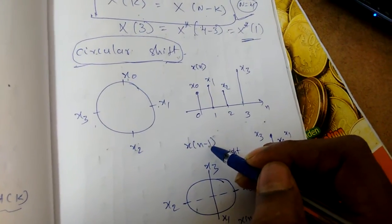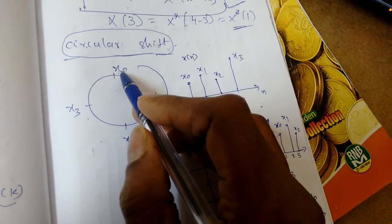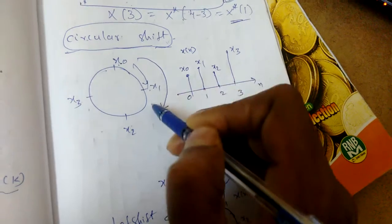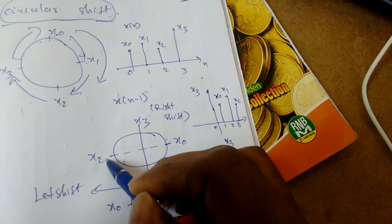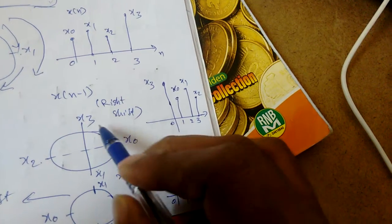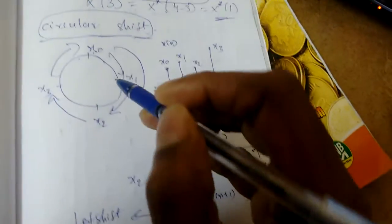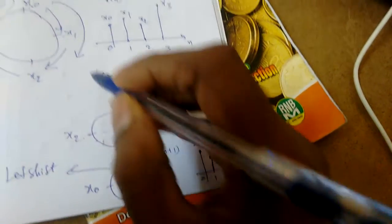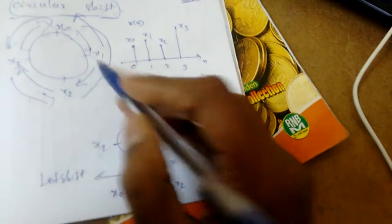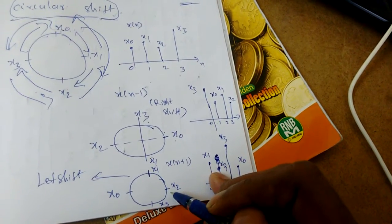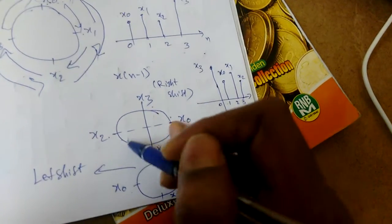For x(n-1), a right circular shift occurs: X₃ moves to position 0, X₀ to position 1, X₁ to position 2, X₂ to position 3 — giving {X₃, X₀, X₁, X₂}. For x(n+1), a left circular shift occurs: X₁ moves to position 0, X₂ to position 1, X₃ to position 2, X₀ to position 3. For n+2 or n-2, apply the shift one more time.